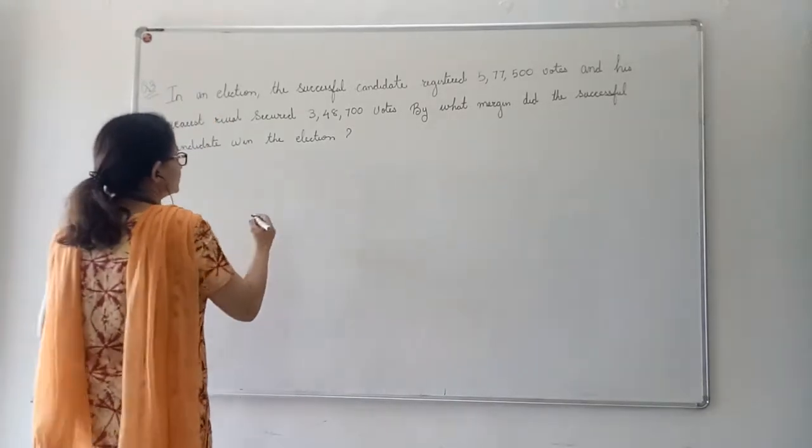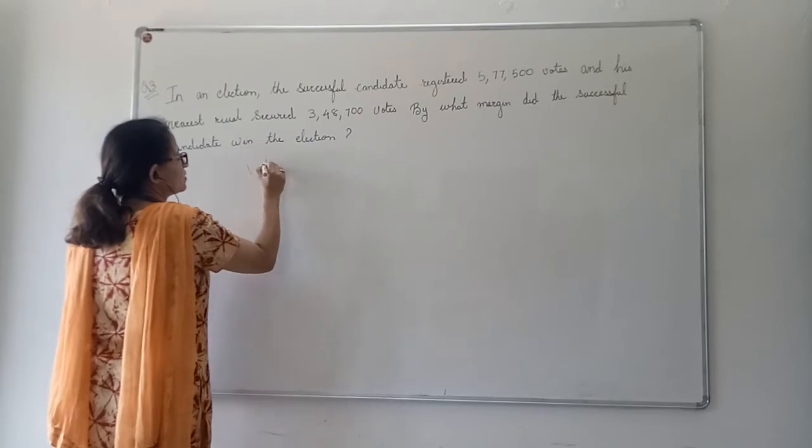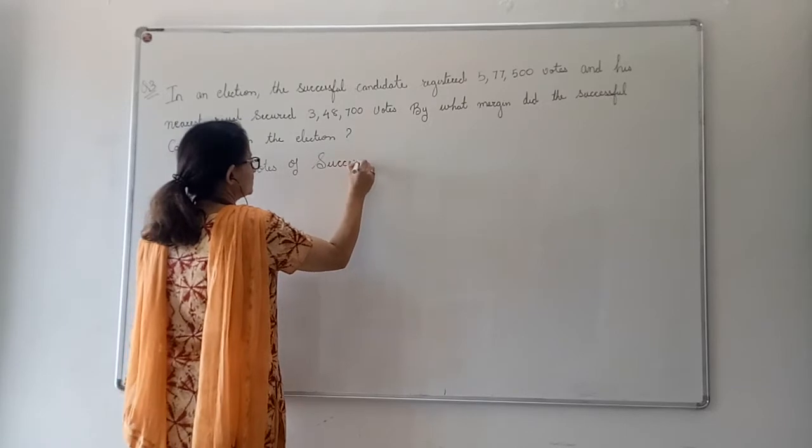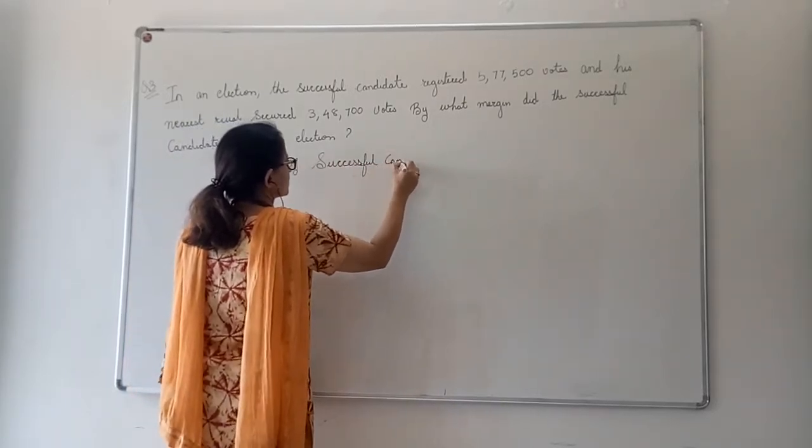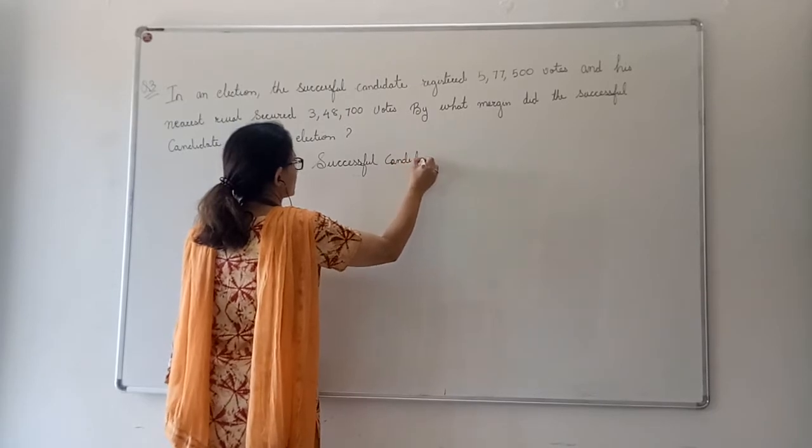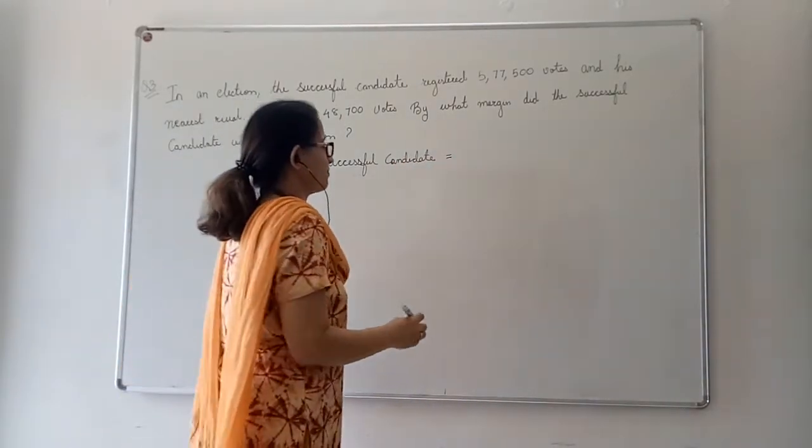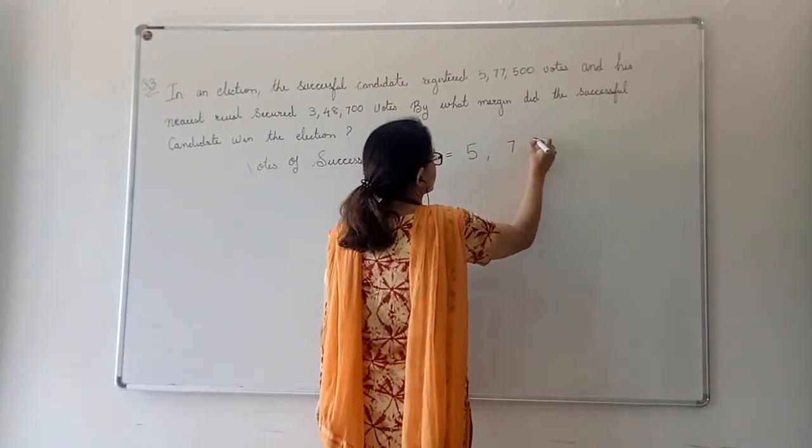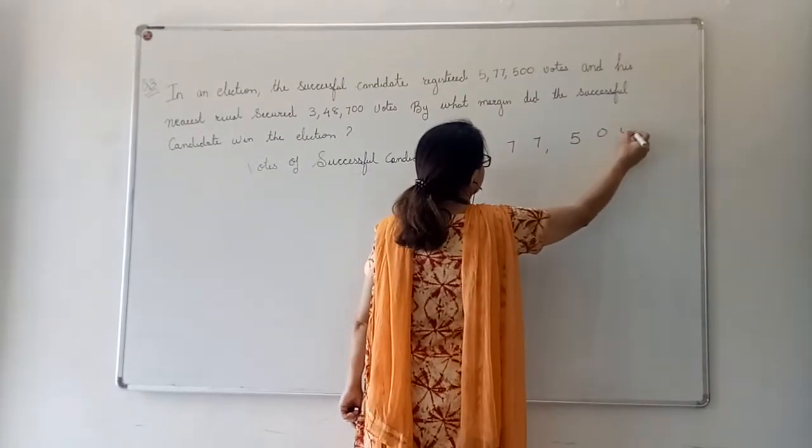Now, how to write? Votes of successful candidate. Keep some gap between the digits, because we will do the operation here itself. 5,77,500.